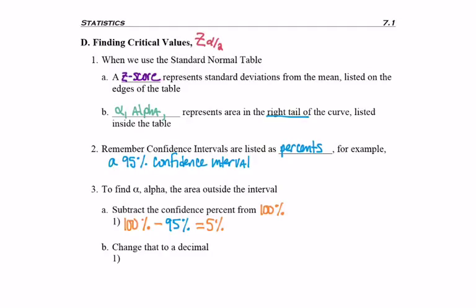This 5% is the complement of the area under the curve. Whenever we list alpha, we always list it as a decimal, so I need to change our 5% to 0.05.